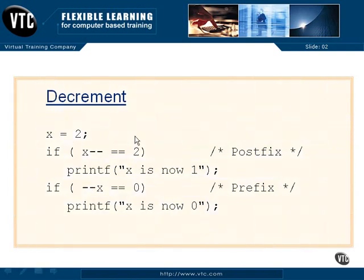Decrement works just the same way. Here we're going to set up and say that x is equal to 2. And if x minus minus decrement is equal to 2, that's our postfix. And that will be the case because we will do the comparison first because we have the postfix decrement.